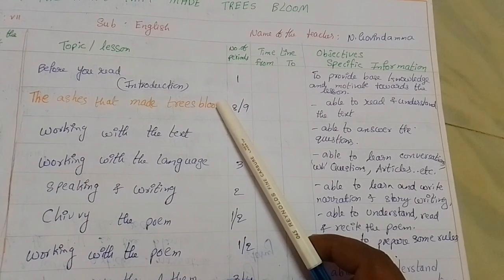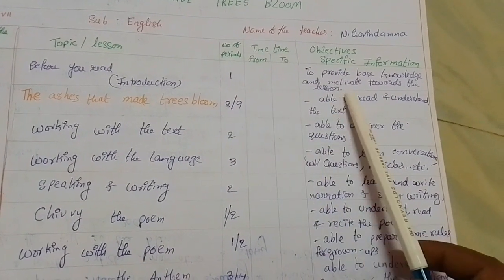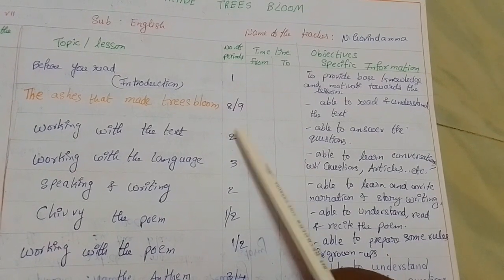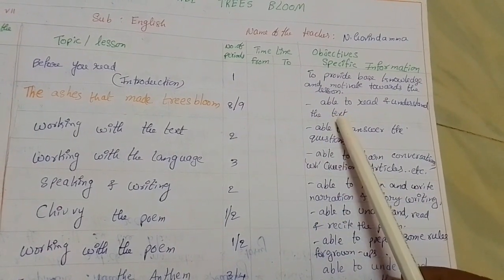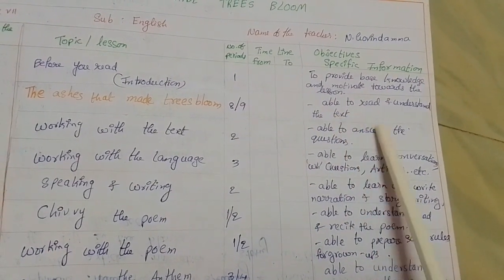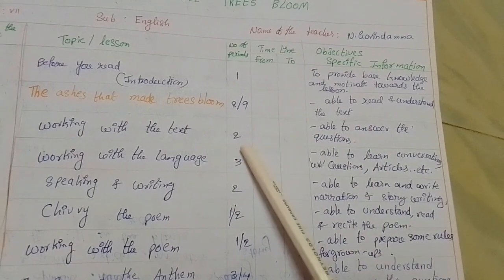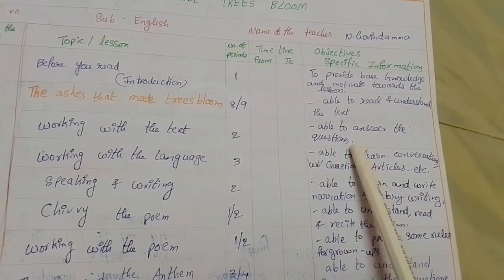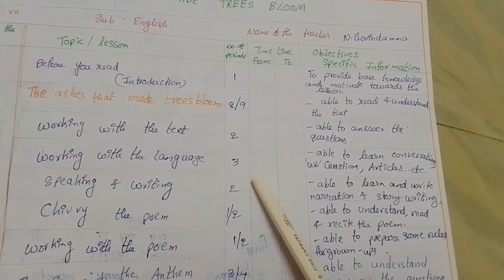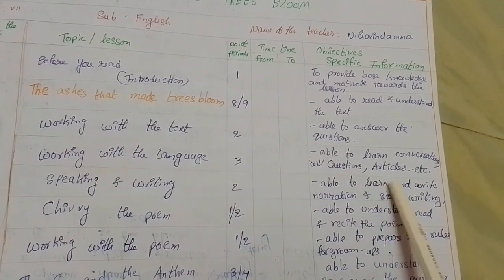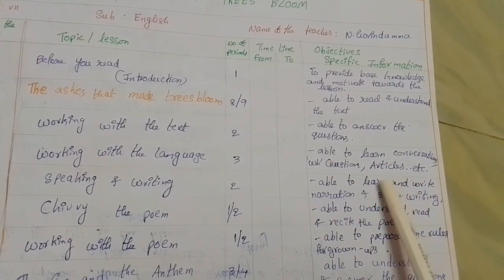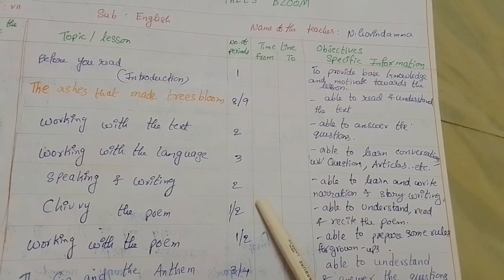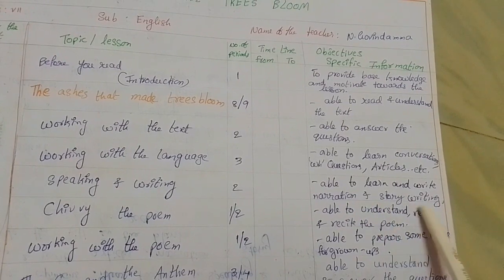For objectives: we need one period for introduction to provide base knowledge and motivate towards the lesson. For 'The Ashes That Made Trees Bloom' we need eight to nine periods to read and understand the text. Working with the text needs two periods for students to answer questions. Working with language needs three periods for students to learn conversations, WH questions, articles, etc.